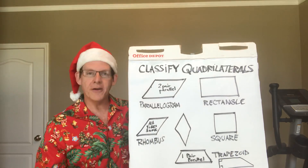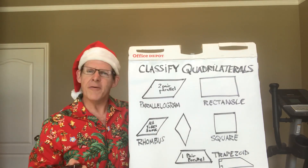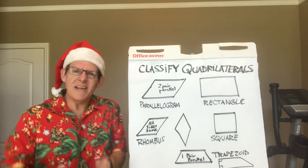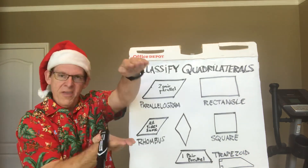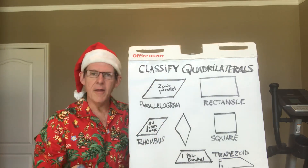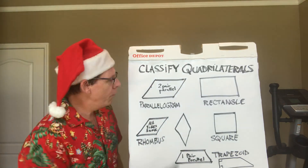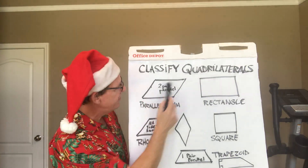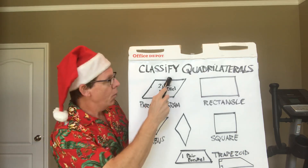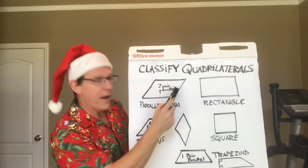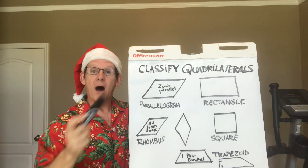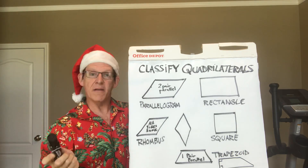The first one is called a parallelogram. Parallel — do you remember what that means? It means the lines go like this. They can even go like this. Parallel means they're never going to touch. We have four sides, and this one has two pairs of parallel sides — one pair, two pair. That's what we call a parallelogram: a four-sided shape with two pairs of parallel sides.